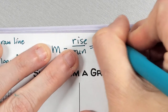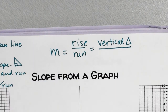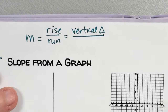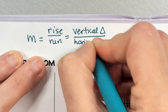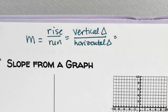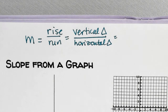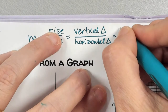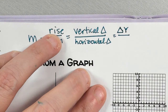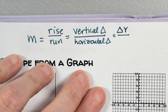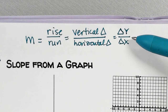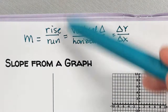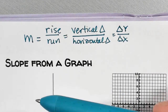Rise is vertical change — and change is a triangle, so I'll write it with the delta symbol. Run, because on planet Earth we are tethered by gravity and we run along the ground, is horizontal change. Knowing that vertical goes up and down, the vertical axis is Y — so vertical change is how my Y is changing. Horizontal change is X. And look at that — that's rate of change right there. So when we find slope using rise over run, we're actually finding rate of change, just visually instead of mathematically.